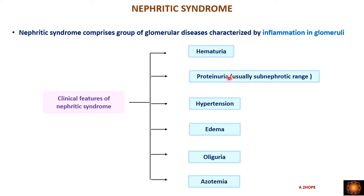These are the clinical manifestations. To remember them, use the mnemonic A2HOPE: A stands for azotemia, the two H's are for hematuria and hypertension, O is for oliguria, P is for proteinuria, and E is for edema. Now we will see why these manifestations occur.